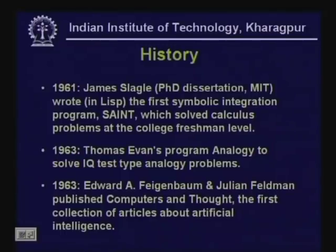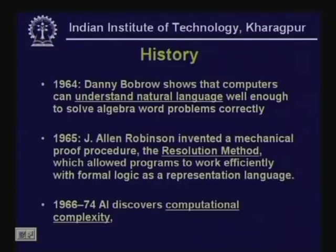In 1961, James Slagle wrote the first symbolic integration program, called SAINT, which could solve calculus problems at the college freshman level. In 1963, Thomas Evans' program Analogy could solve IQ test problems. In 1963, Feigenbaum and Feldman wrote a collection of important articles about AI. In 1964, Danny Bobrow worked with algebra word problems. In 1965, Alan Robinson developed the resolution method. From 1966 to 1974, there was a lot of work on computational complexity by computer scientists and theorists, which had a tremendous impact on the field of AI.